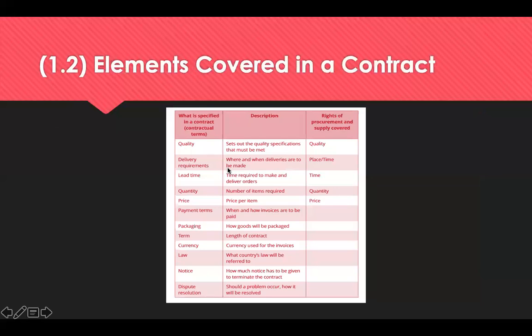We're now going to look at the elements covered in a contract. Contracts are legal agreements between two or more parties — legally binding, and they must have essential elements in order to be enforceable in court: an offer, an acceptance, consideration, intention and capacity. Some contracts missing one or two of these elements will not hold up in court, so it's best to have all things covered.